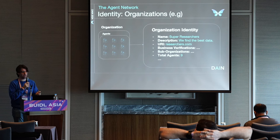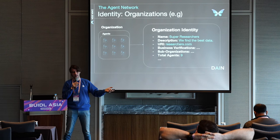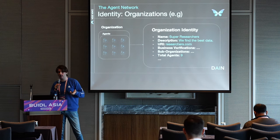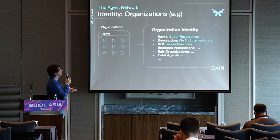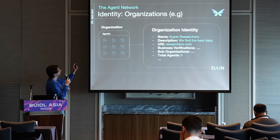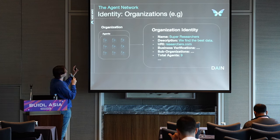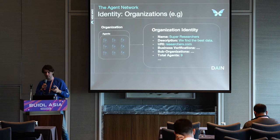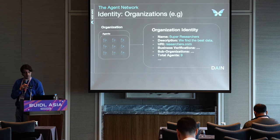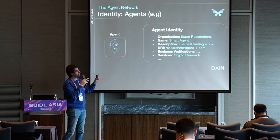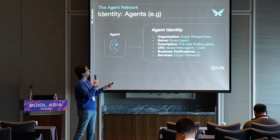Now let's go to the core features of the agent network. Organizations have some identity — if you know Microsoft, you know they are good at software and have created multiple products. In our case, identity identifies what organizations are about. For example, an organization called Super Researches has a description and contains multiple agents, meaning it can own multiple multi-agent systems. On blockchain, they have their own identity with a total agent count recorded. Going deeper into agents: most will be conversation managers, each agent having their own identity and reputation, with proof on-chain.